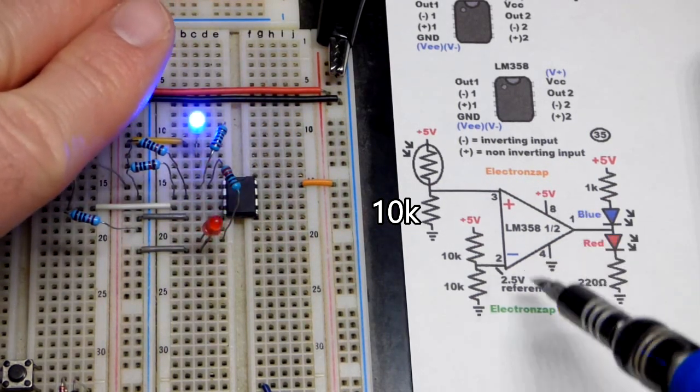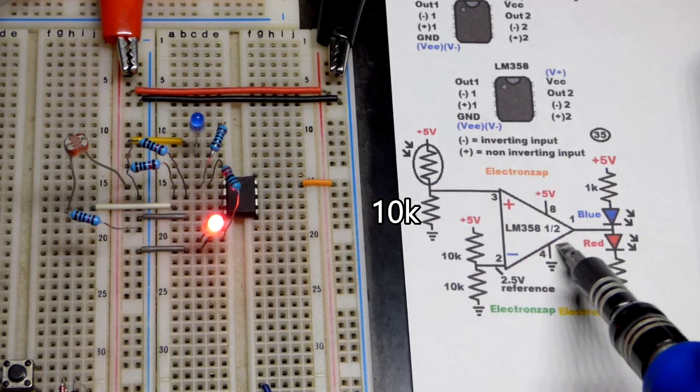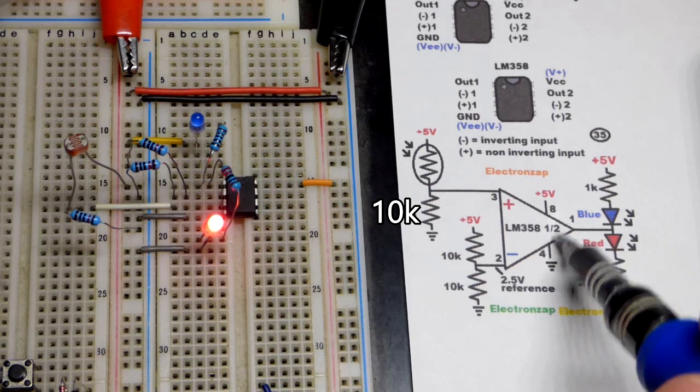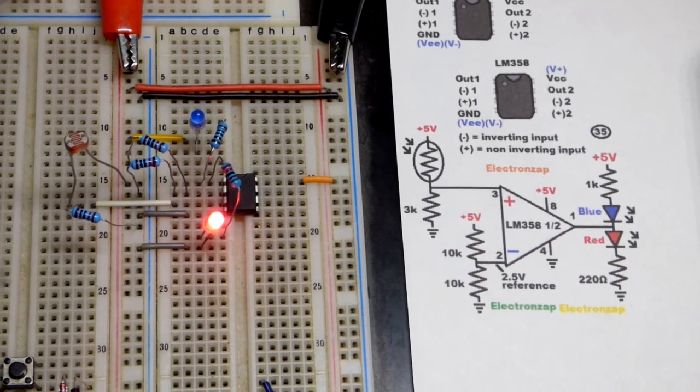As long as it's below approximately 2.5 volts, since we used our fixed resistors. When the output's low we have a connection to ground. This is all stuff I covered a lot in other videos, so we're not going to dwell on them too much.